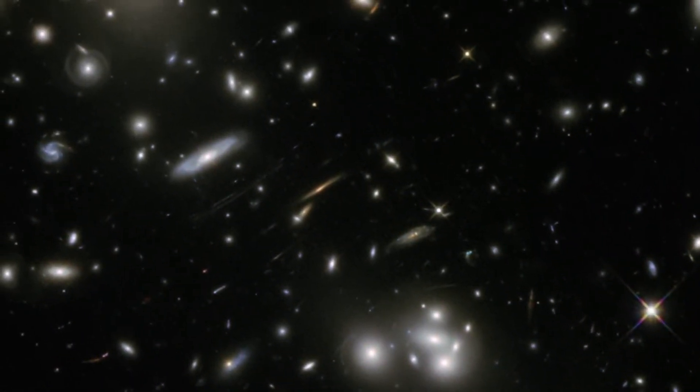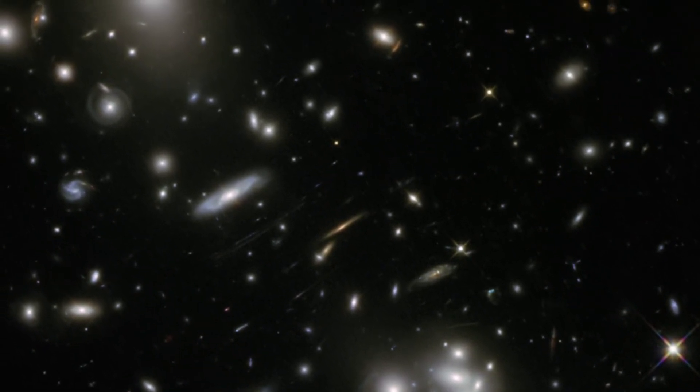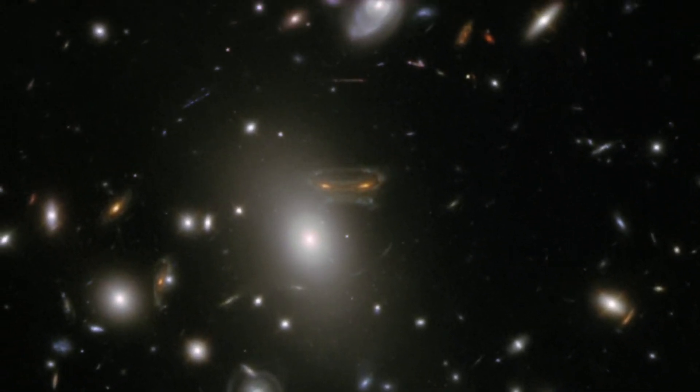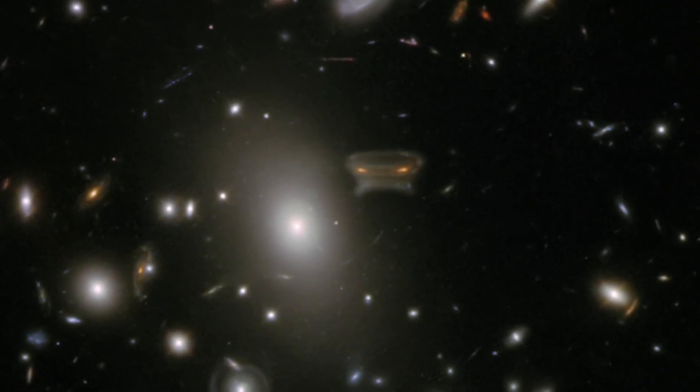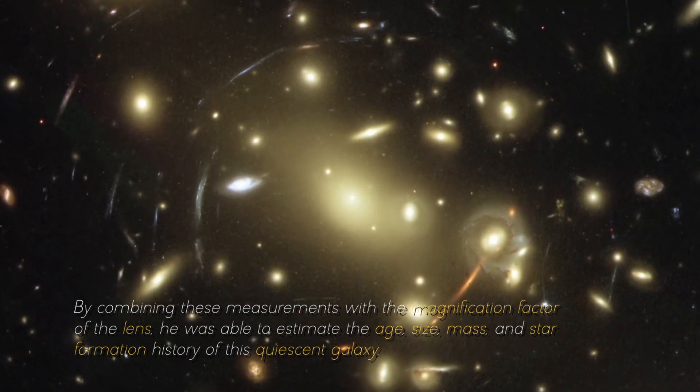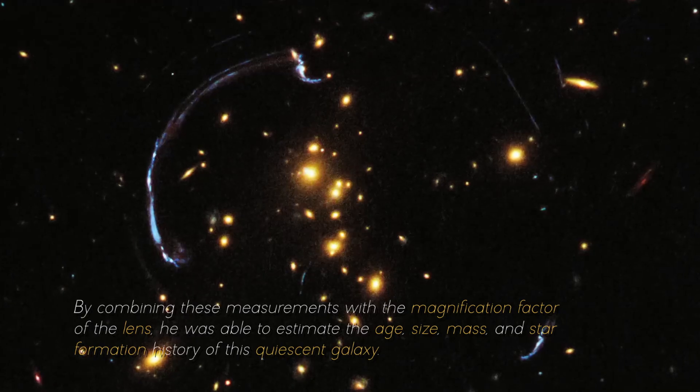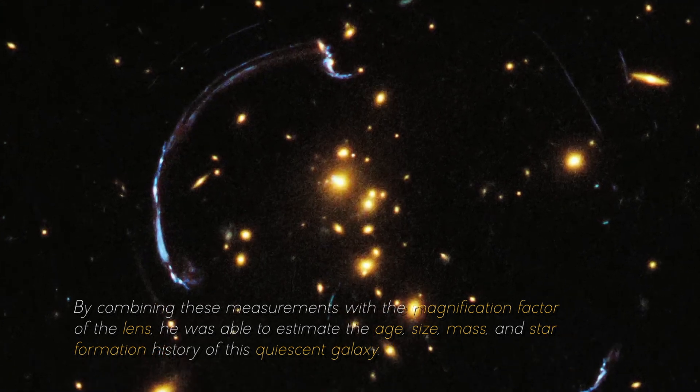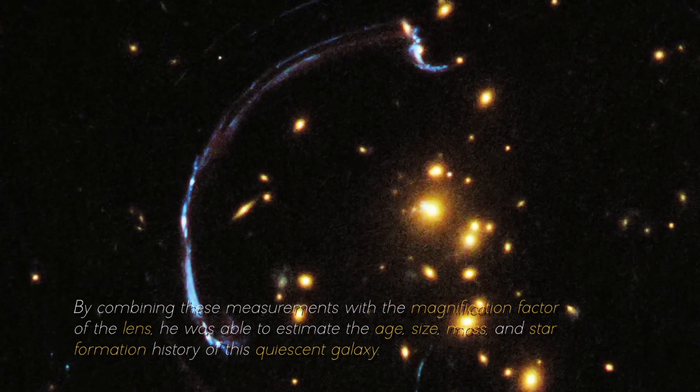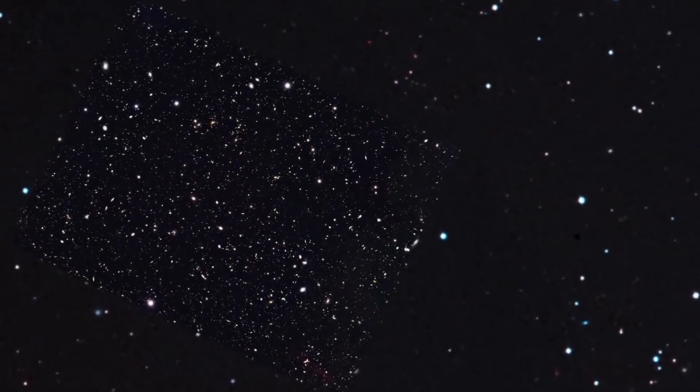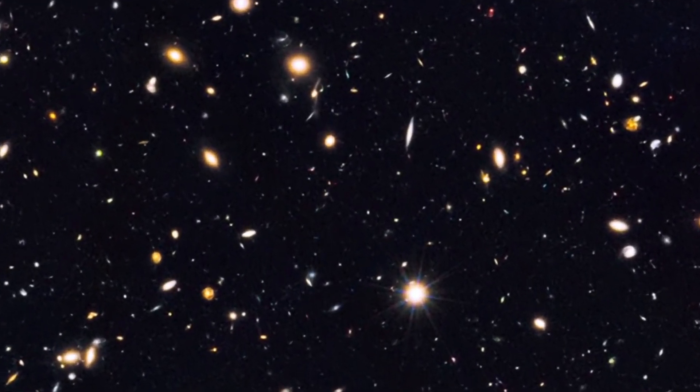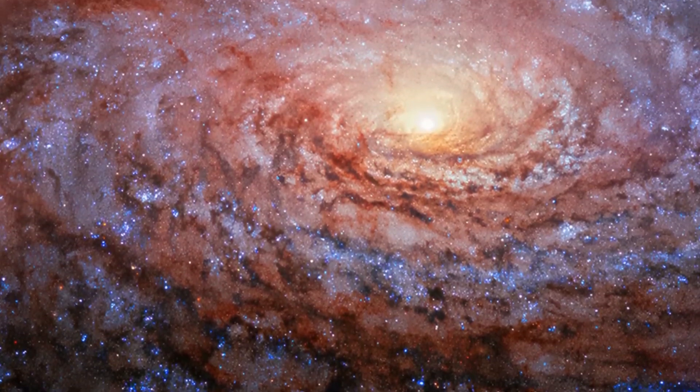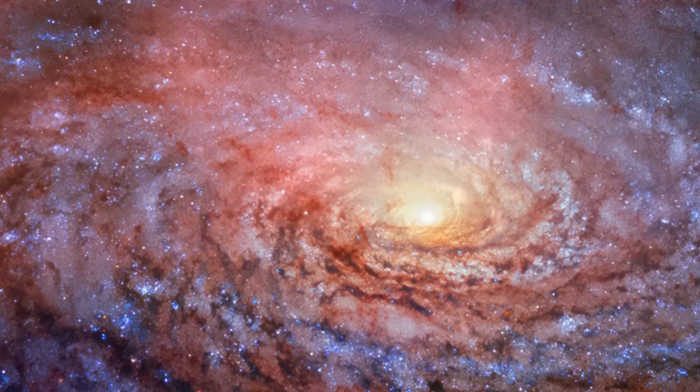Using the NIRCam instrument, James Webb was able to resolve the Einstein ring into multiple images of the quiescent galaxy and measure its brightness and color in several wavelength bands. By combining these measurements with the magnification factor of the lens, he was able to estimate the age, size, mass, and star formation history of this quiescent galaxy. All these questions are challenges that the James Webb Space Telescope will attempt to address in the future as it continues to explore the distant, ancient universe with its extraordinary resolution and unparalleled sensitivity.